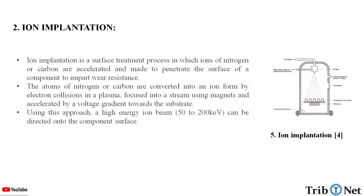What is ion implantation? Ion implantation is a surface treatment process in which ions of nitrogen or carbon are accelerated and made to penetrate the surface of a component to impart wear resistance. The atoms of nitrogen or carbon are converted into ions formed by electron collisions in a plasma, focused into a stream using magnets and accelerated by a voltage gradient towards the substrate.